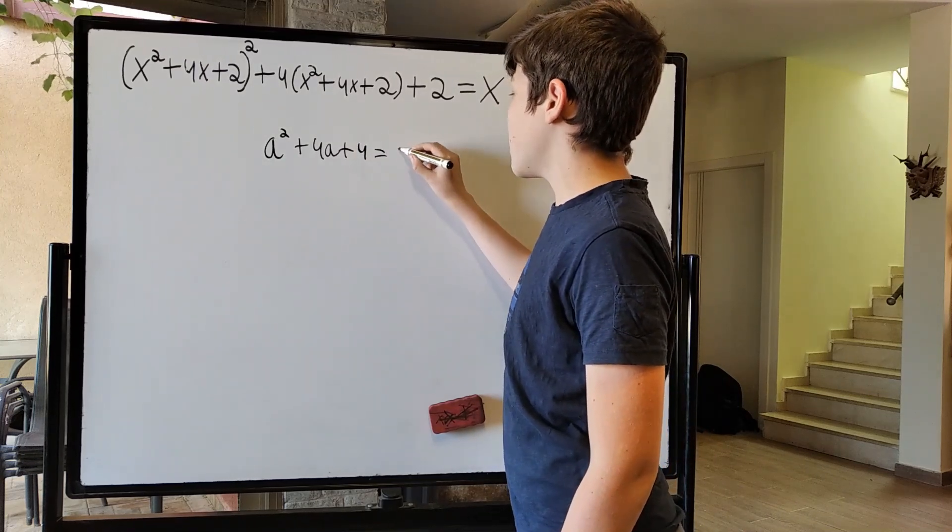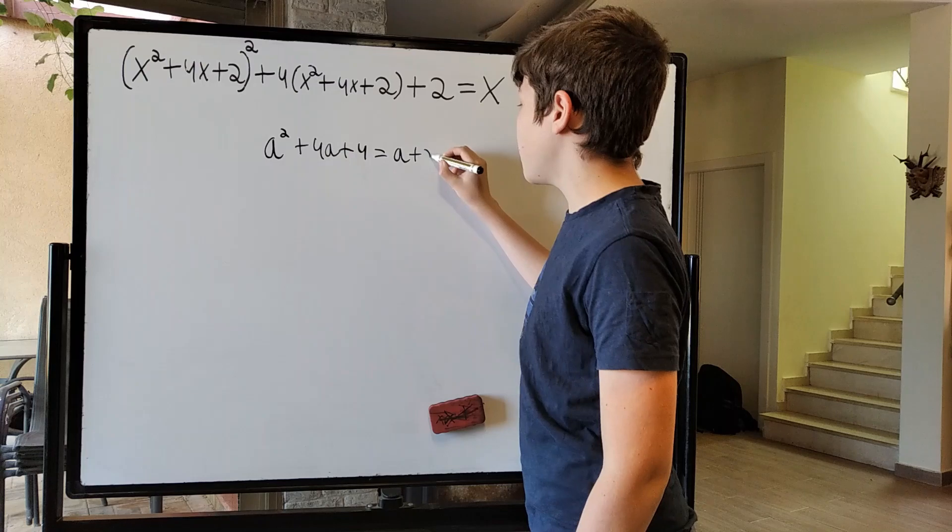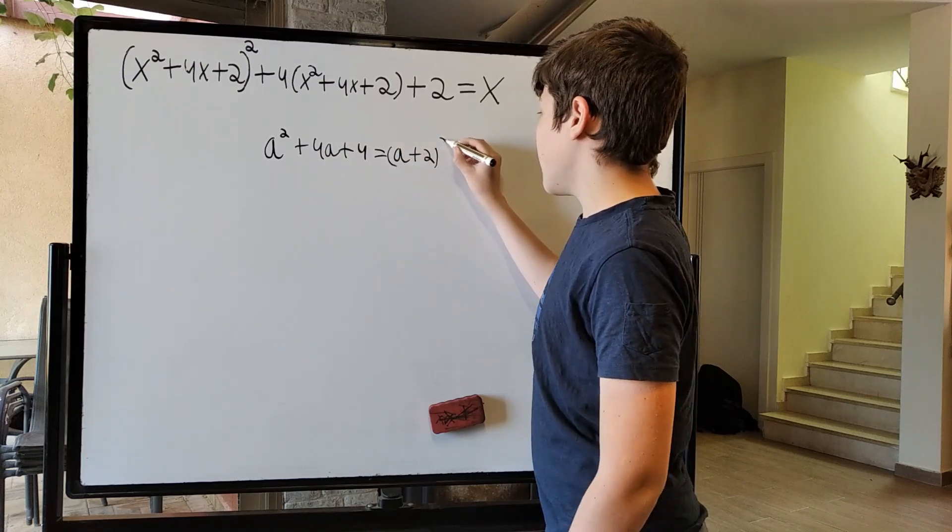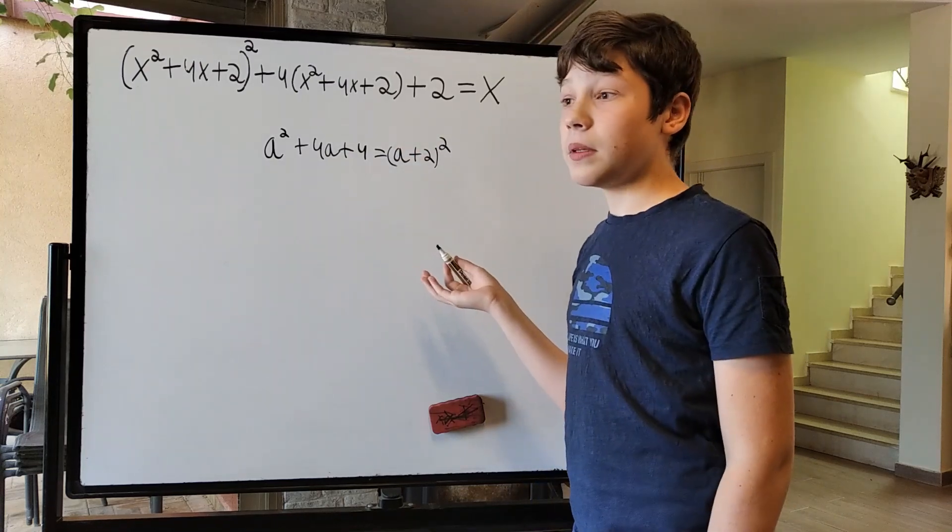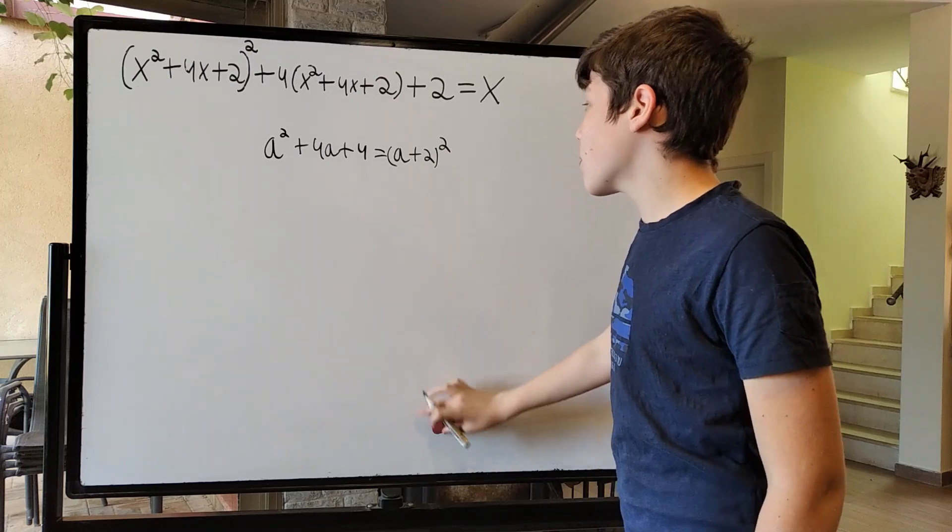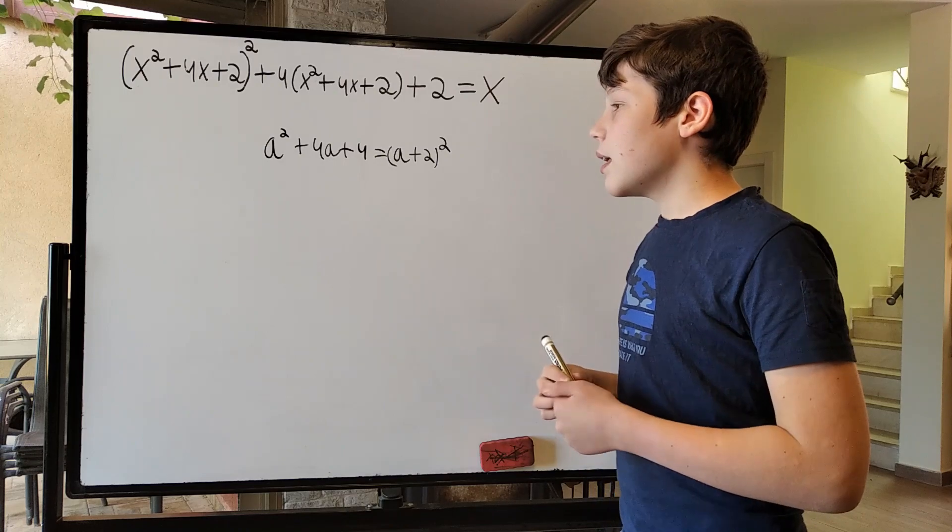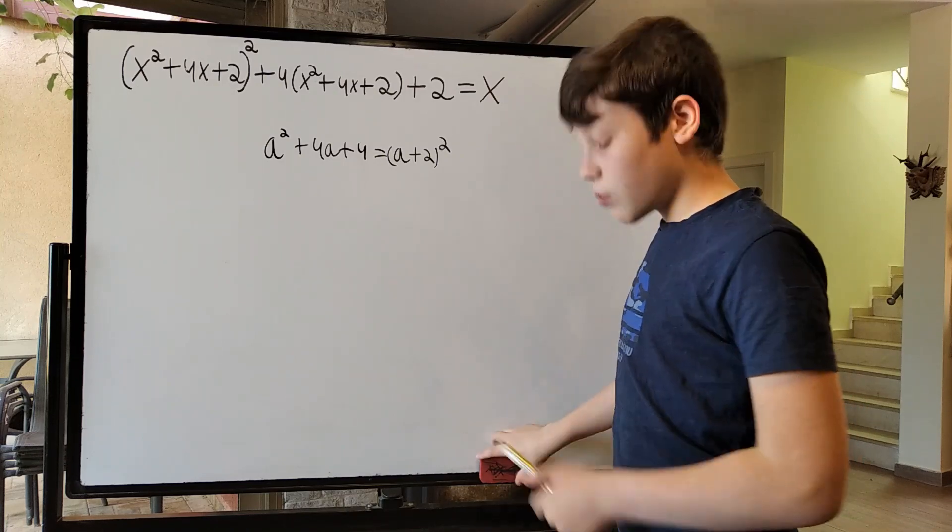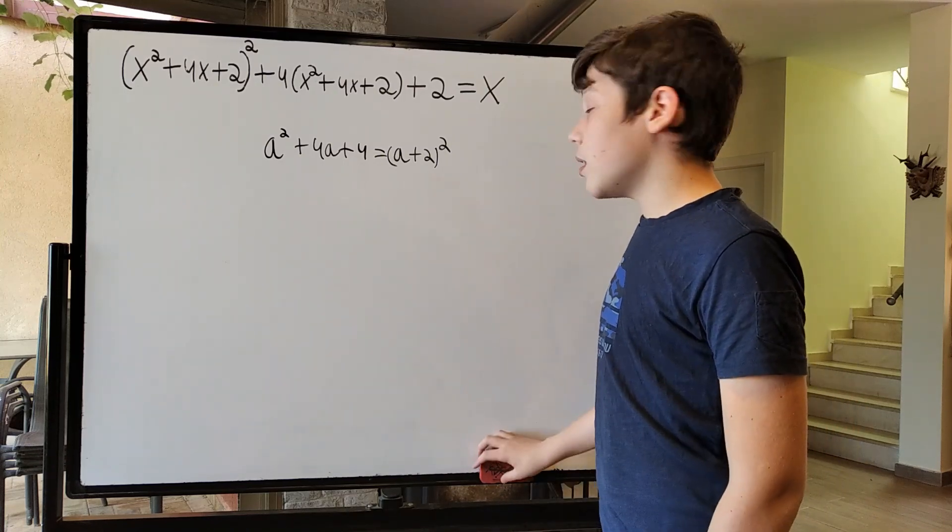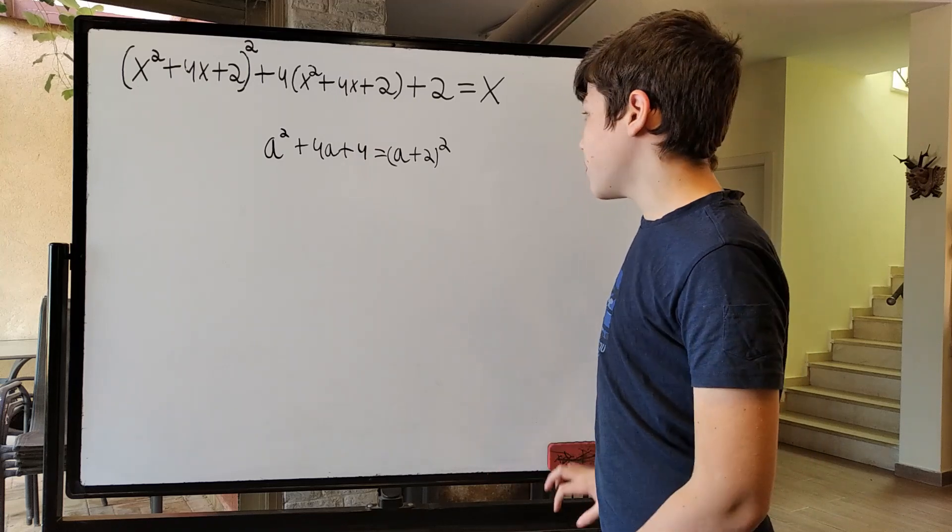...which is obviously a plus 2 and all of this squared. And if we go with all of this squared, then we might be able to work with something like this. And it might be simpler.